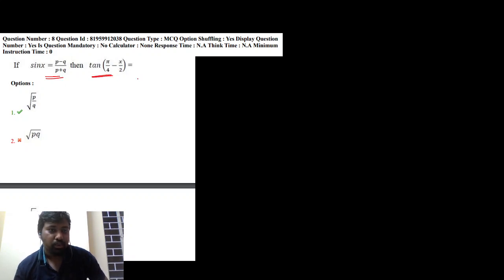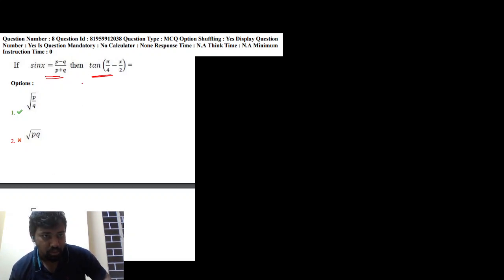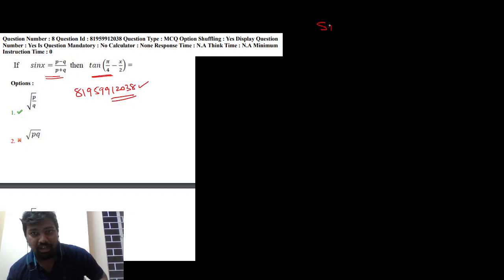First question: sin x equal to (p minus q) by (p plus q), then find tan(π/4 minus x/2). Simple, very simple. Question ID is 81959912038. Let me explain: sin x equal to (p minus q) by (p plus q).